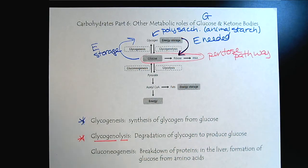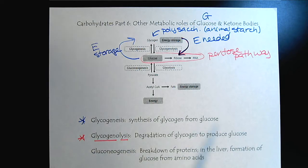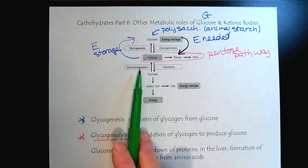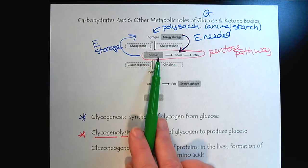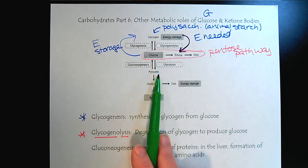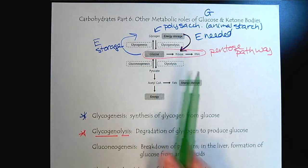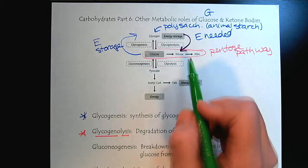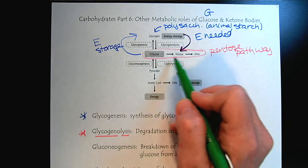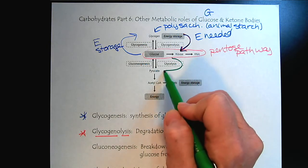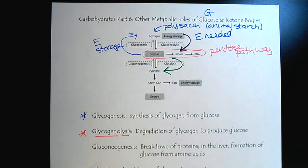Now we will look at these important pathways. Glucose to pyruvate — we've studied that in great detail. That is glycolysis, and that's right here on the diagram.